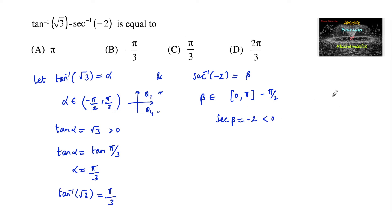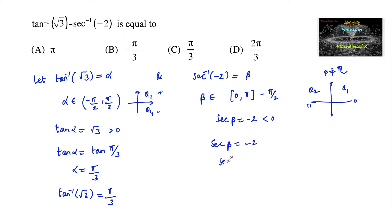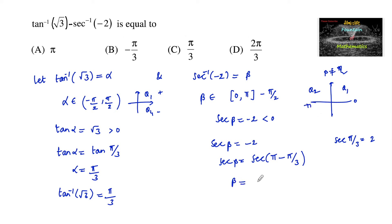Here secant beta equals negative 2, which is less than 0. In the range 0 to pi, we consider the second quadrant since secant is negative there. We can write secant beta equals secant of pi minus pi by 3, since secant of pi by 3 equals 2. Therefore beta equals pi minus pi by 3, which is 2 pi by 3.